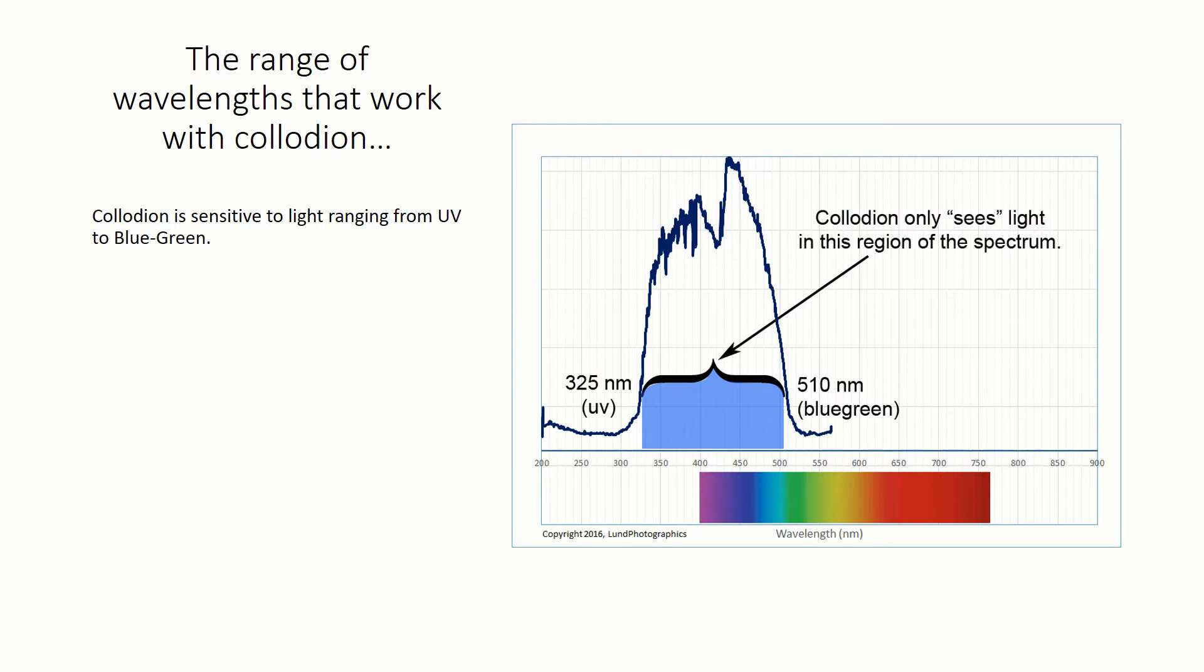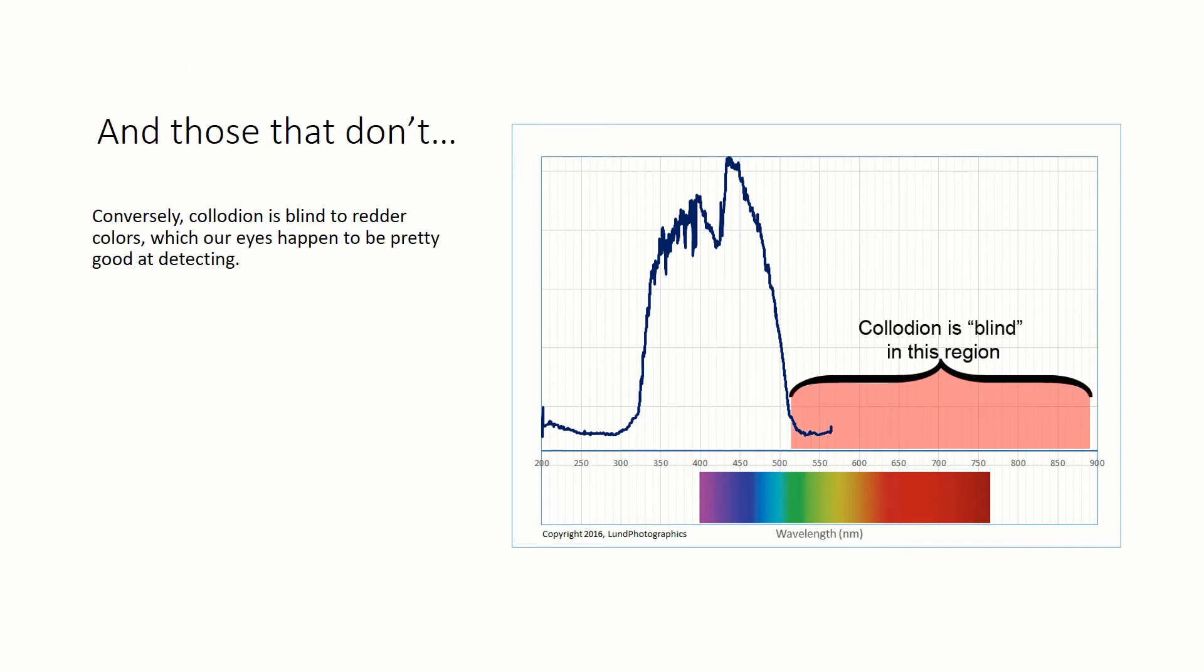First of all, collodion is sensitive in the region between near-UV and visible blue-green, and about half of its sensitivity lies in the UV, which is beyond what our eyes can see. This fact will raise its ugly head when we're trying to estimate exposure times. If we can't see UV, how do we know how much of it's there to base our exposure upon? Conversely, collodion is blind to redder colors, which our eyes happen to be pretty good at detecting. Together, this can make judging light levels somewhat problematic, but we'll come back to this in a moment.